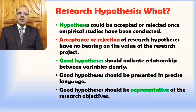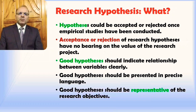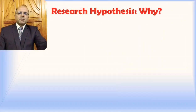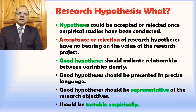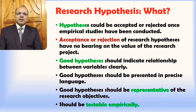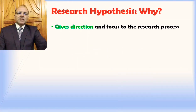Good hypotheses generally should indicate the relationship between variables clearly, with no ambiguity in the way hypotheses are presented in research studies. Good hypotheses should be in precise, scientific language. The next important thing is that good hypotheses should be representative of the research objectives. Good hypotheses should also be testable empirically — we should not develop hypotheses that cannot be tested empirically.